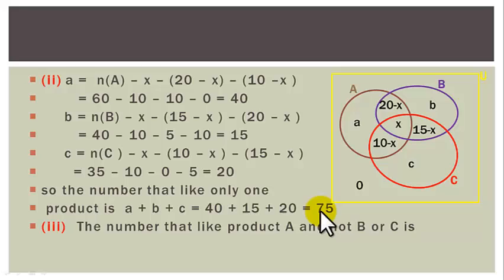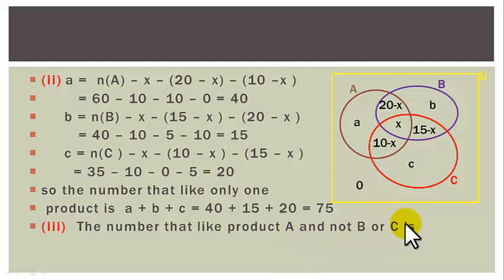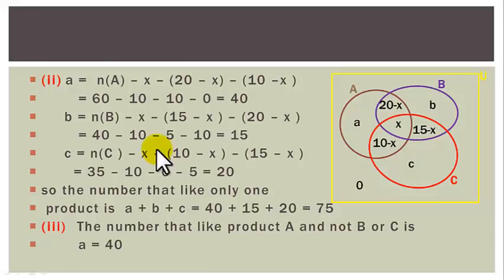For question 3: the number that like product A and not B or C is region a (only A), which we have already calculated to be 40.